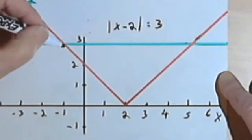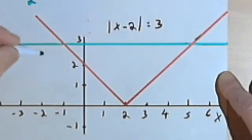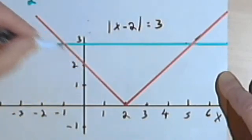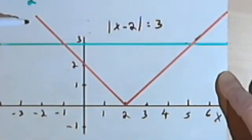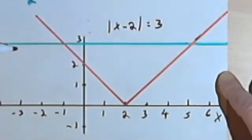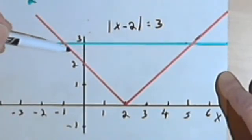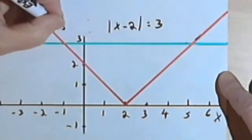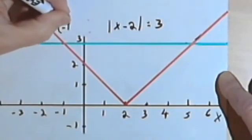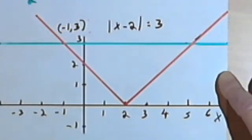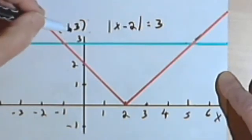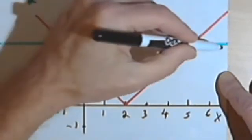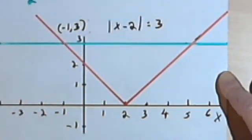And then we can use the intersect function on the calculator, and we'll find that this place on the left where they cross, where the red absolute value V crosses the horizontal y equals 3 line. And I'm going to find that that point is negative 1 comma 3. And it makes sense that I've got 3 for the second part of my ordered pair, because I've got this horizontal line going across at y equals 3.